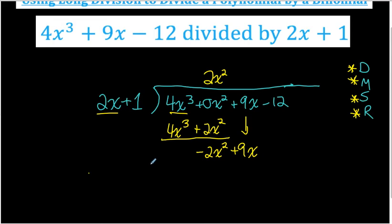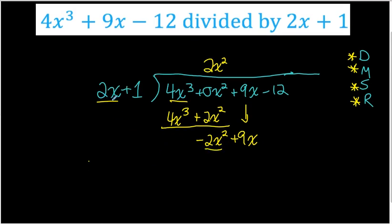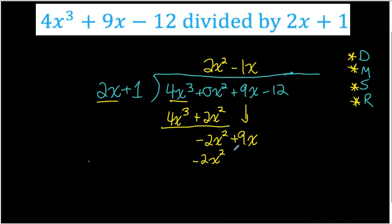Repeat: divide negative 2x squared by 2x — negative 2 divided by 2 is negative 1, and x squared divided by x is x — giving negative x. Line it up above the degree 1 term. Multiply negative x by 2x plus 1: negative x times 2x is negative 2x squared, and negative x times 1 is negative x. Subtract: negative 2x squared minus negative 2x squared is 0, and 9x minus negative x is 10x. Bring down the last term.